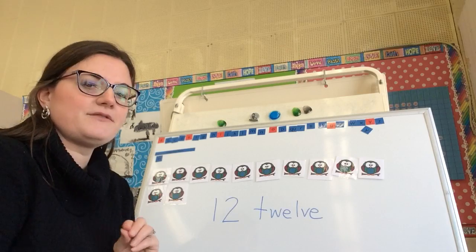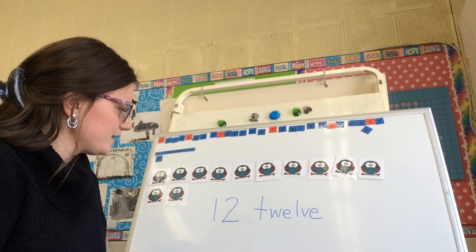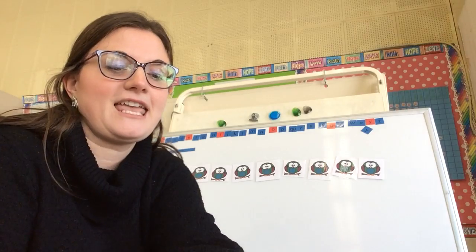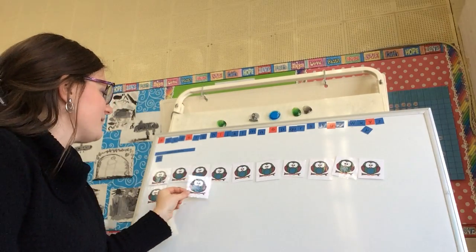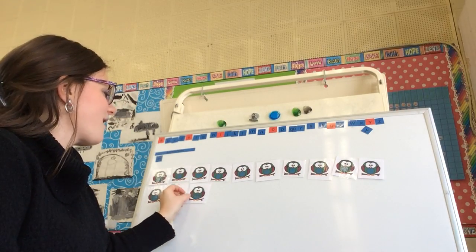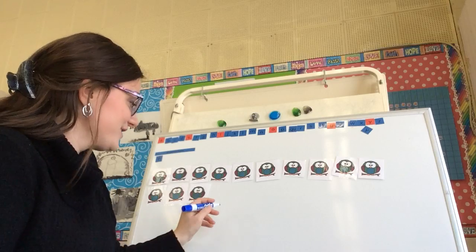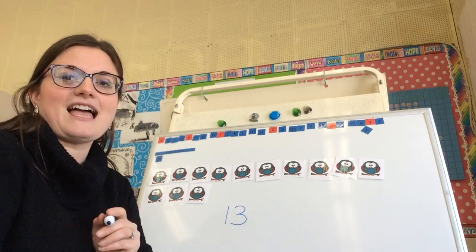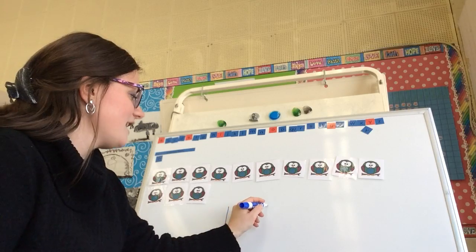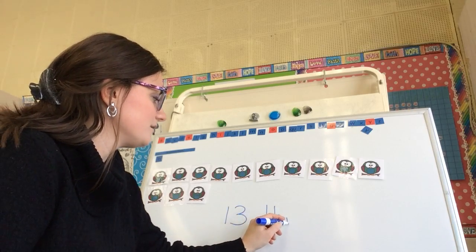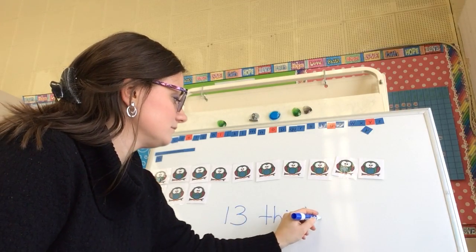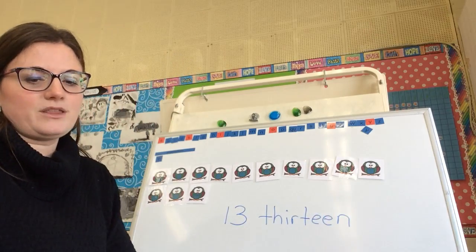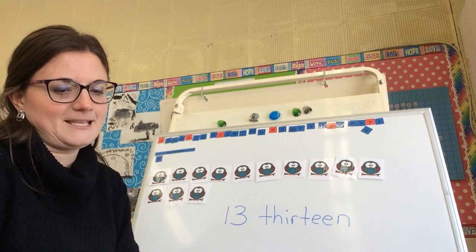Just hit pause if you need a little bit more time. And then if I add another owl, how many do I have now? Thirteen. And this is what thirteen looks like in digits and the number word. And that's what thirteen looks like.